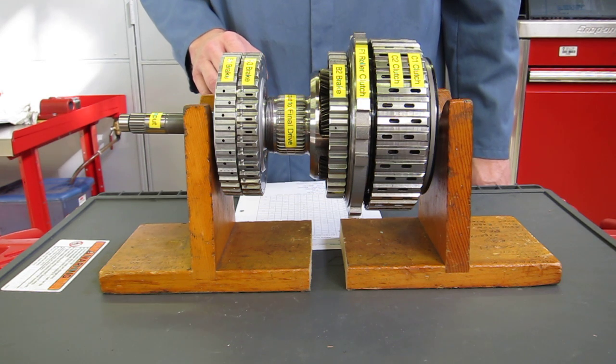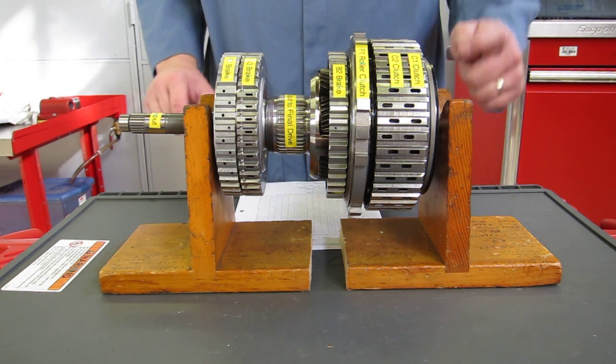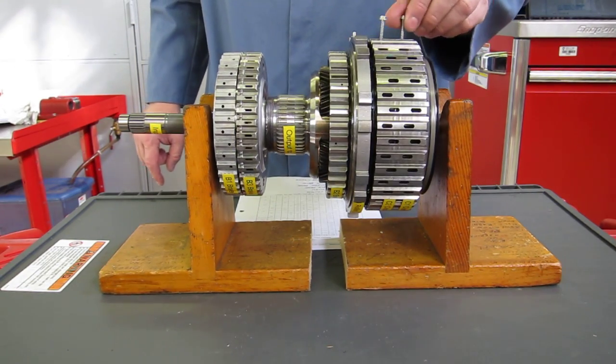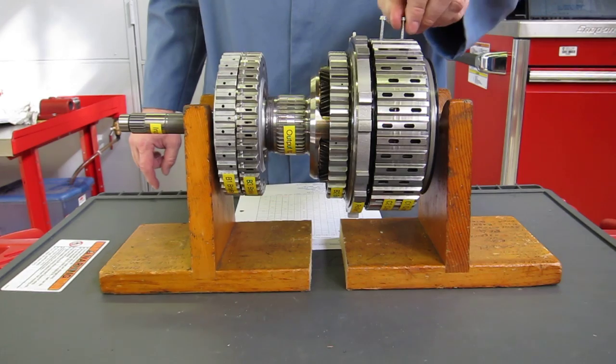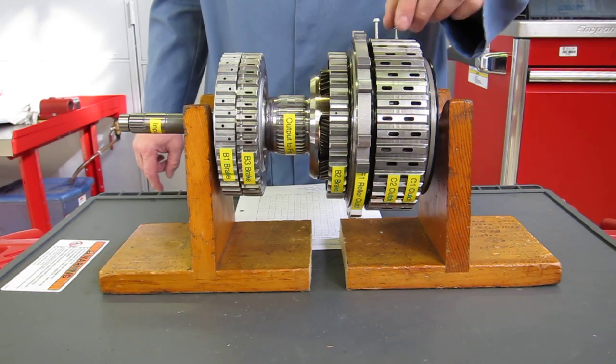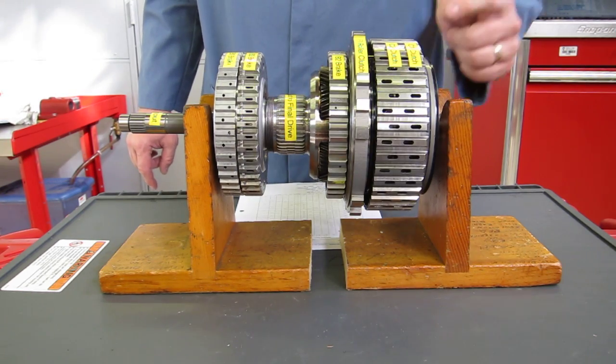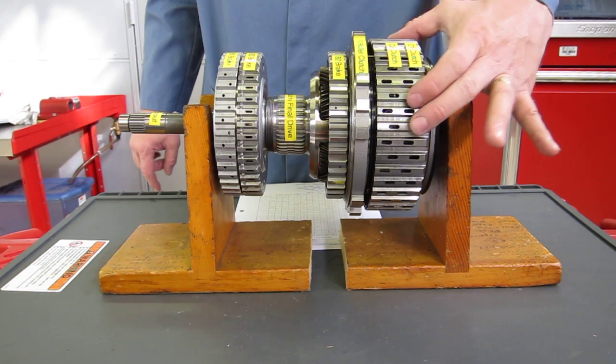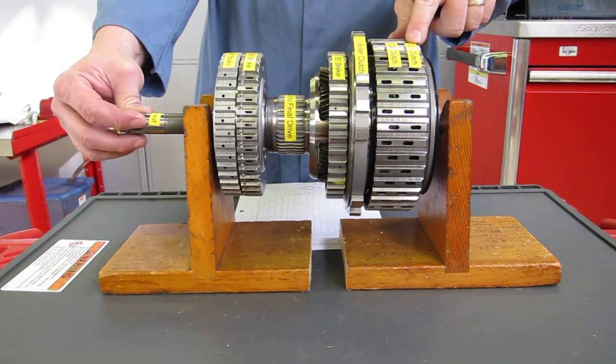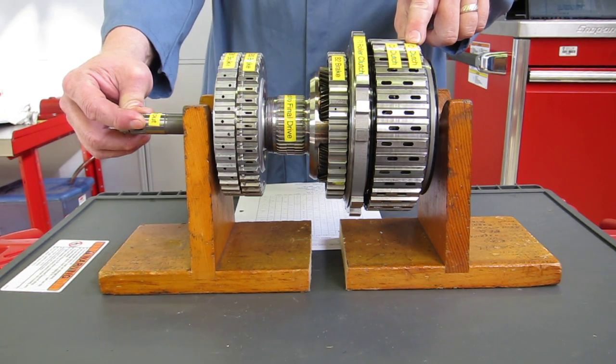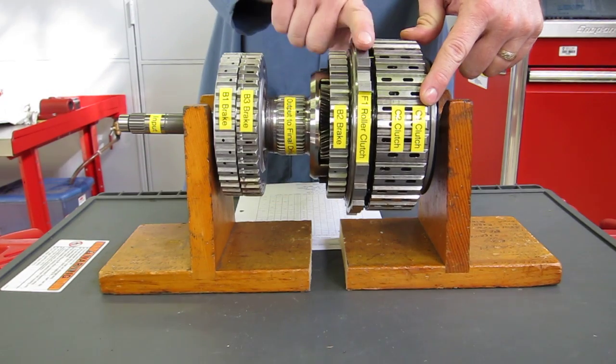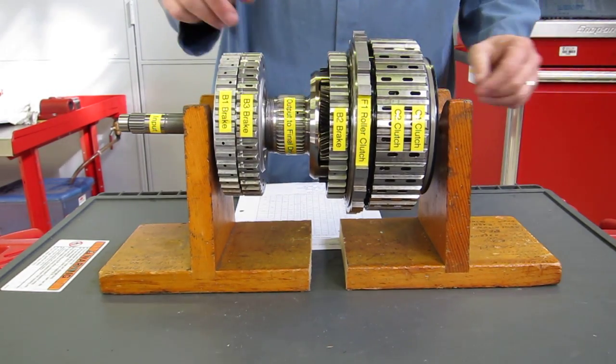So for first gear, we are going to apply the C1 clutch, that's this clutch right here. In this demonstration, I've got some sheet metal screws that I can run in and grab the housing that the C1 clutch would normally grab. The C2 clutch I've got released. We're going to turn the C1 clutch, and in first gear we are going to have the F1 roller clutch, this one right here, held solid by the case. These big lugs are just splined right to the case.